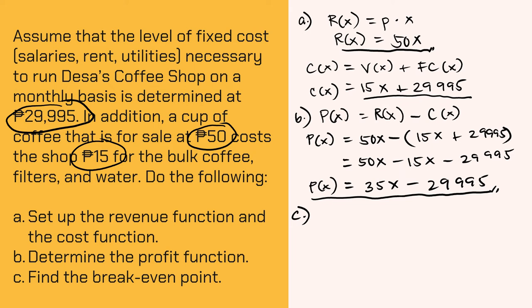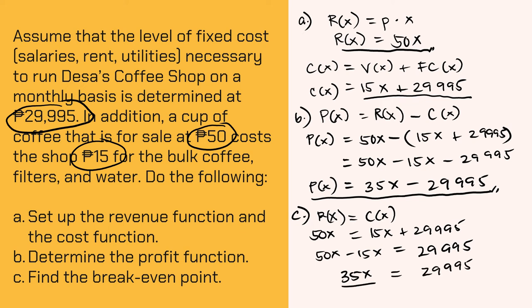Next, let us find the break-even point. Take note that the break-even point is where the revenue equals the cost function. Therefore, we have to equate 50X to 15X plus P29,995 and then solve for the value of X. Combine like terms. We have 50X minus 15X equals P29,995. 50X minus 15X is 35X. So 35X equals P29,995. Divide both sides by 35. So we have X equals 29,995 divided by 35, which is 857. This is the break-even point quantity or units.